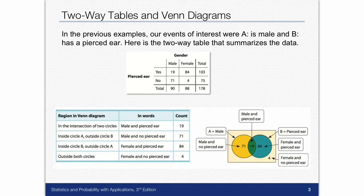So here's our circle. A is male, B is pierced ears. The blue is the pierced ears, the yellow is male or not male.